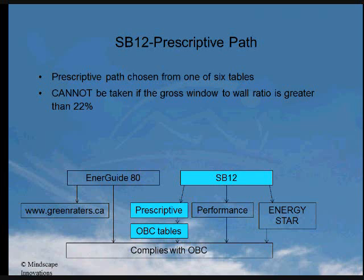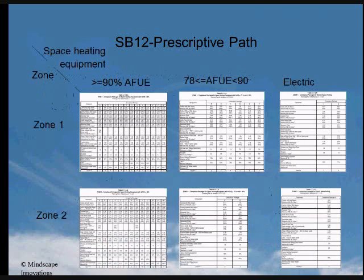On the other hand, if you have less than a 22% window-to-wall ratio, you could comply by following a pre-approved prescriptive compliance path. Shown are the six tables of pre-approved compliance paths, grouped according to climate zone and space heating system.